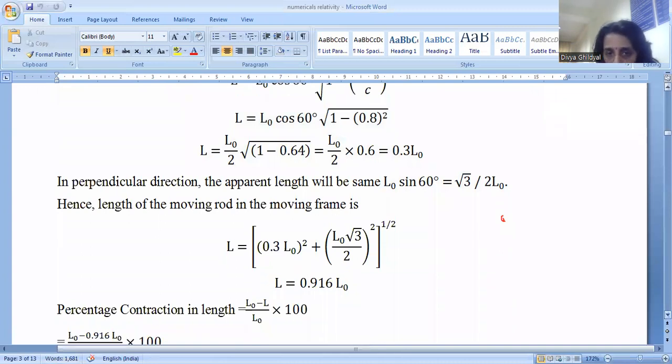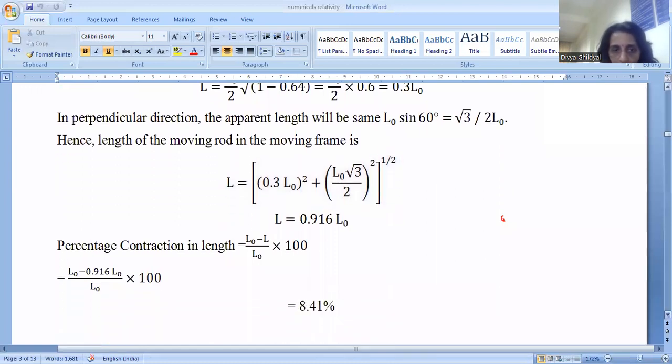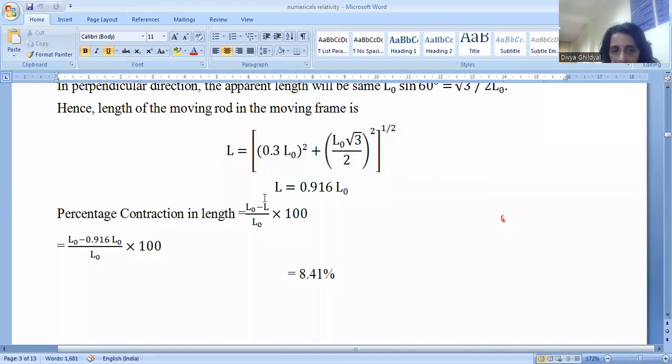Now the length of moving rod from the resolution of vectors is L equal to under root cos square theta component plus sin square theta component. And formula for percentage contraction is L_0 minus L upon L_0 into 100, because I know that my length has contracted from its initial value, so it will be less than this. The formula for percentage contraction is change in length upon original length into 100. I have put my numerical value here and I get the answer.